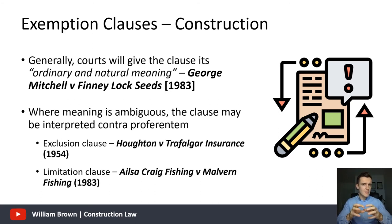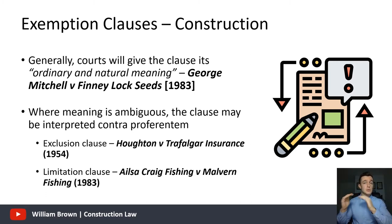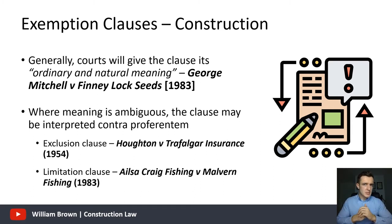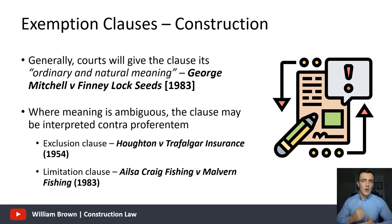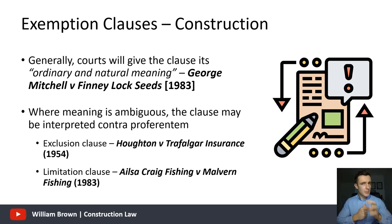The reason the court applied contra proferentem so rigorously was because the term in question was a proper exclusion clause — excluding liability altogether — not merely a limitation clause limiting the payout to a certain amount. When it comes to exclusion clauses, the courts apply contra proferentem very rigorously, much more so than for mere limitation clauses, as illustrated by the contrasting case of Ailsa Craig Fishing v Malvern Fishing — which I'll let you read to see how an ambiguous limitation clause was treated differently.